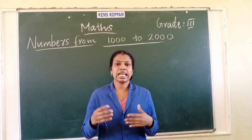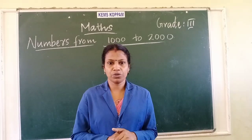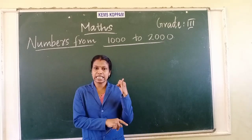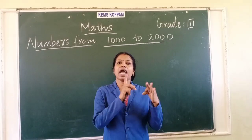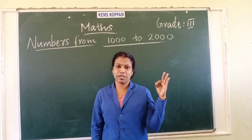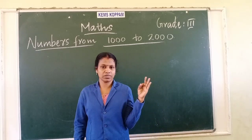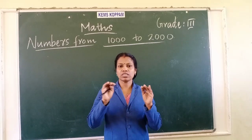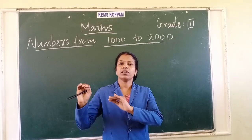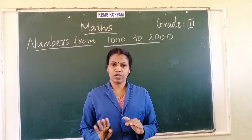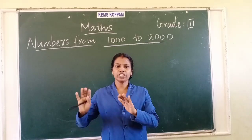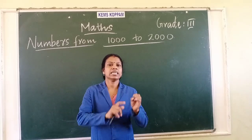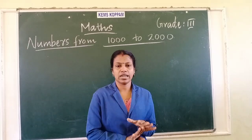So this is the next work for you. You have to write the tens name, hundreds name, and thousands name in your notebook. You can write the thousands name only up to 10,000. No need to write up to 99,000 — just write 10,000 only.